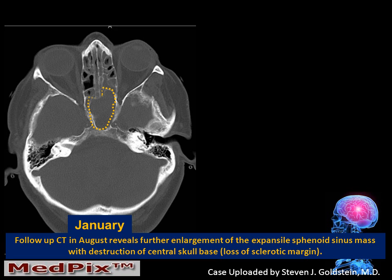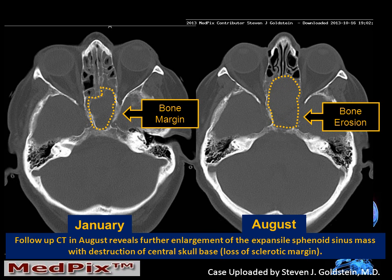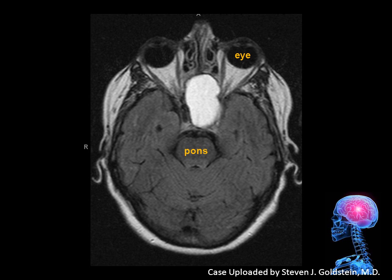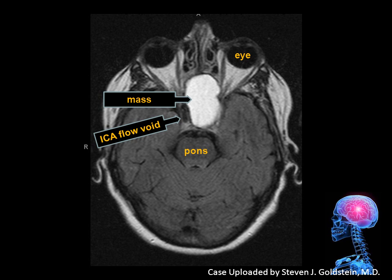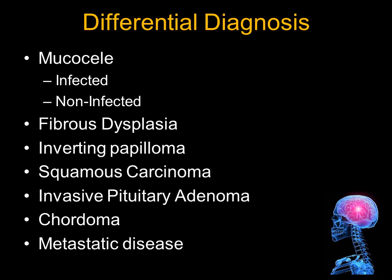If we carefully compare the original image from January, we can see the bone margin. But looking at the current image from August, the mass has now expanded and we have lost the bony detail of the lateral margin on the left side. On the MR, we can see the mass with fluid signal. We can also see the internal carotid flow void in the cavernous sinus — a normal appearance on the right side — but we do not see a corresponding carotid flow void on the left side, and we have lost the sclerotic bone margin.